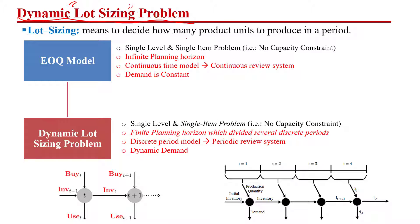Lot sizing means how much of a particular product we should produce in a particular time period. You can call it the lot size, the batch size, or even the production plan for the particular product. The lot sizing is about how much quantity we should produce or even order. One of the basic models used for this purpose is the basic economic order quantity model.